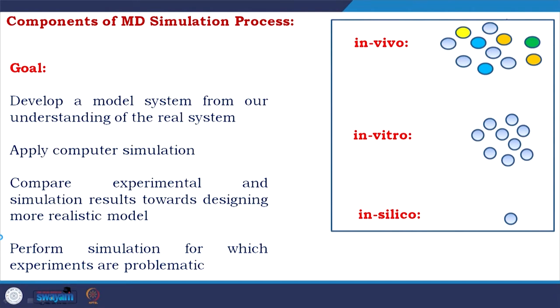When you compare experimental systems: in vivo, which is inside the body, if we consider a protein, in vivo there is a mixture of proteins. In vitro, if you have done the protein purification correctly, you still get your protein in millions of copies. Whereas in silico, the model system, you can choose the number of protein molecules according to your choice — that is the best thing about this type of experiment.